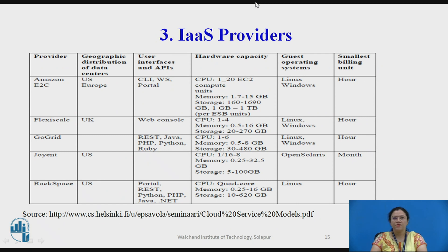Third, we will see the Infrastructure as a Service providers. The list of providers includes Amazon EC2, Flexiscale, GoGrid, Giant, and Rackspace. The geographical distribution of data centers spans the US, Europe, and UK. User interfaces and APIs include CLI, WS portal, web console, REST, Java, PHP, Python, Ruby, portal, and .NET. Hardware capacity covers CPU, memory, and storage requirements. Guest operating systems include Linux, Windows, OpenSolaris, etc. Smallest billing units are available in terms of hours or months.